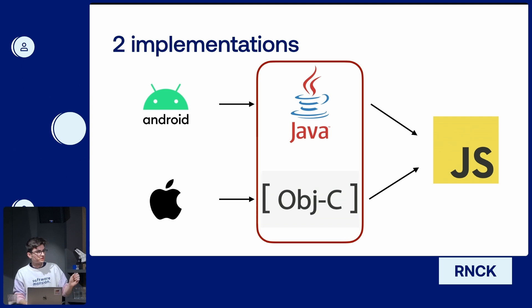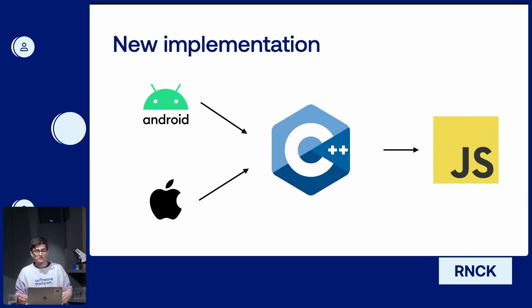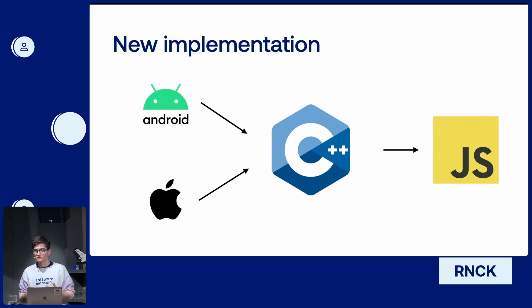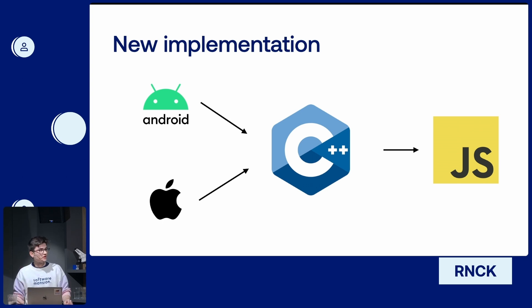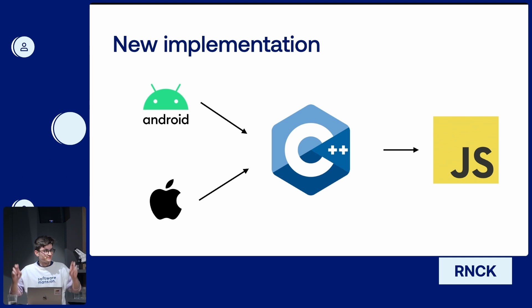That's actually where the new architecture came in, because it allowed us — with an abstraction layer provided by the React Native team — to write this logic basically entirely in C++ without writing any native-only code. This means not only that we now have one code base, so bugs exist in only one implementation, not two. And if we wanted to add some other platform, it should — with an emphasis on 'should' — hopefully be easy.